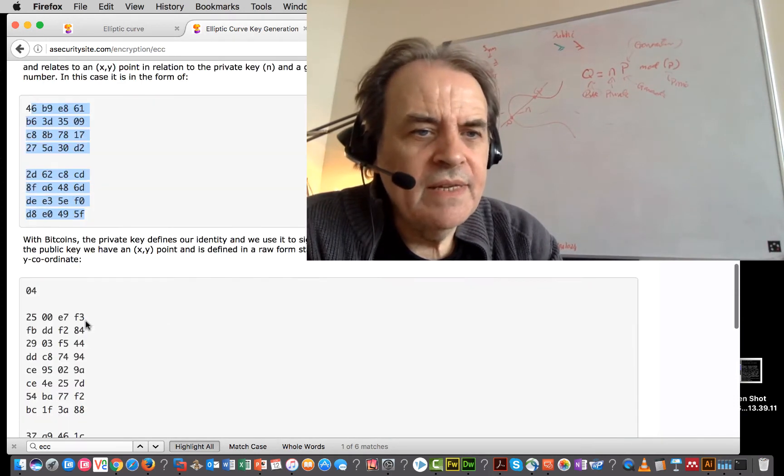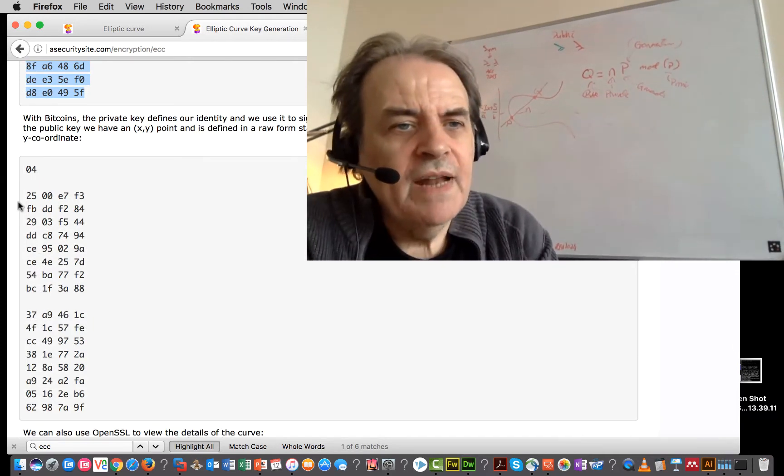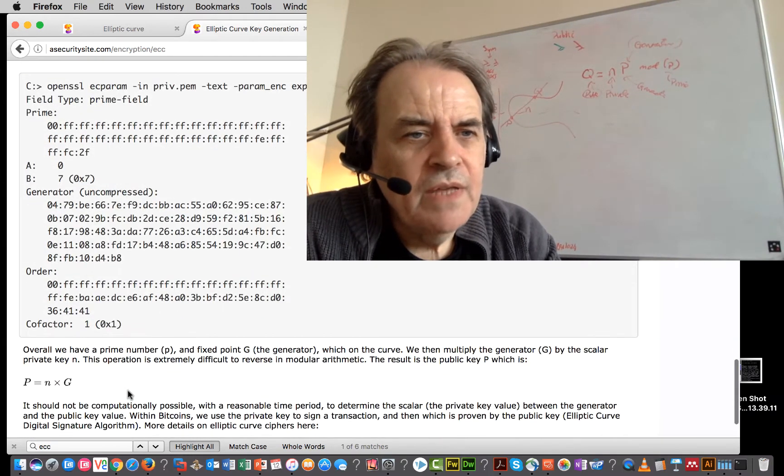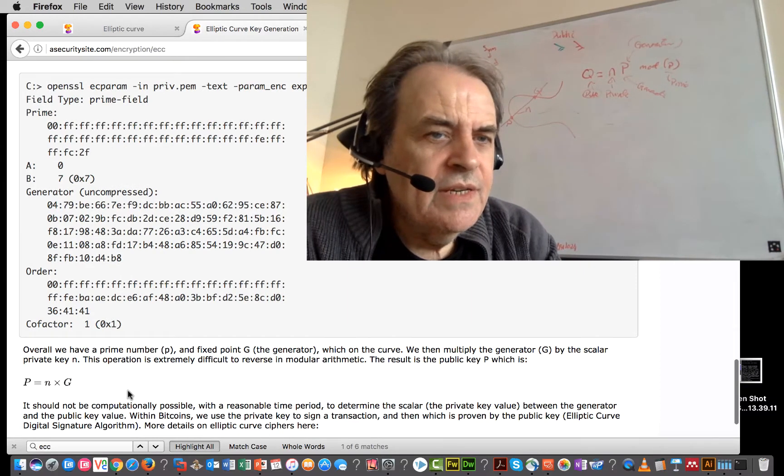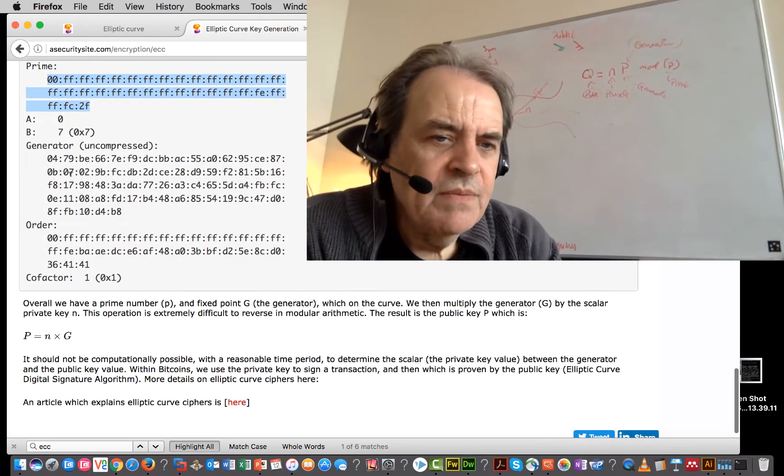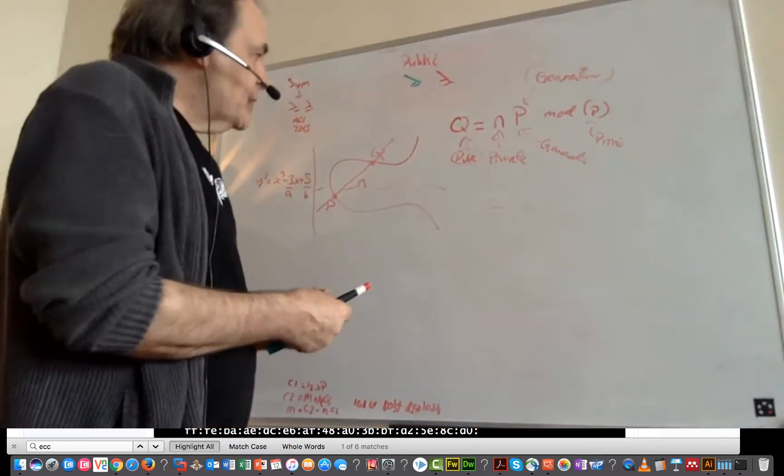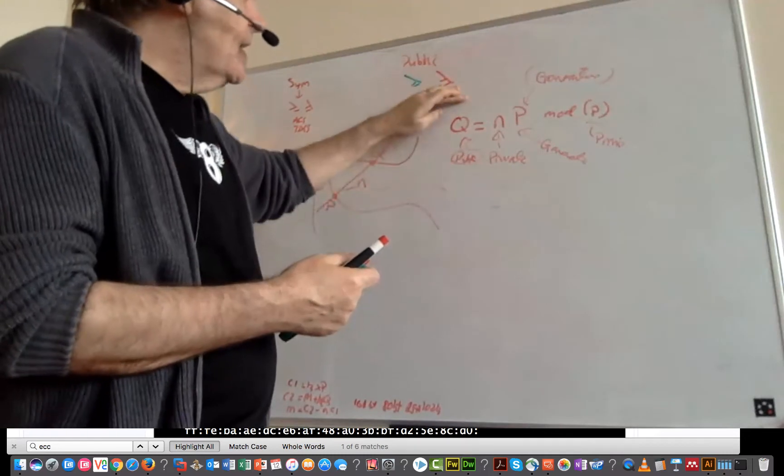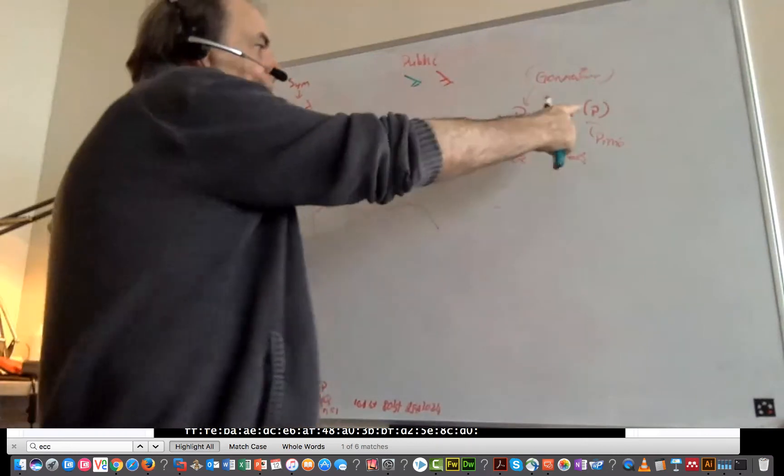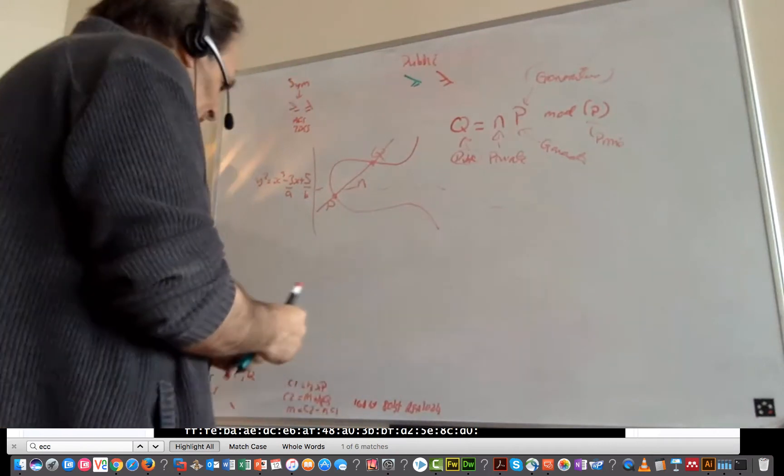After that, we will then get our value here, which will be in the form of an X and Y coordinate. So that gives us our details there. We also have a prime number that we're going to be using. And again, that's an extremely large prime number. So now if we can distribute our public key and our generator and our prime number, it's really difficult to find the value of N that we've actually used. Computationally, it's difficult.